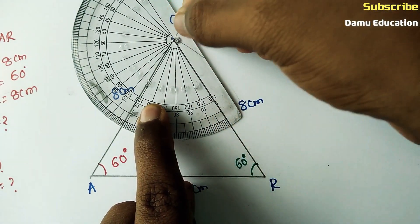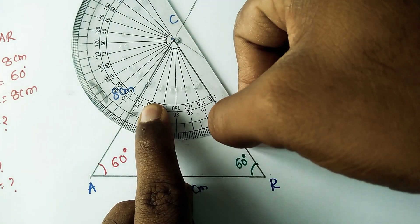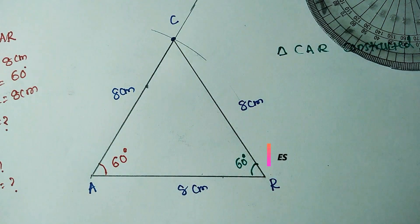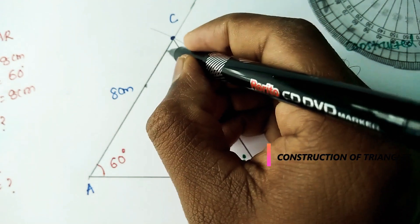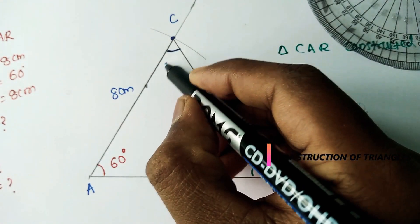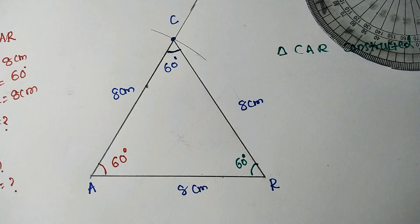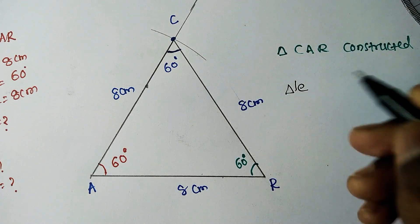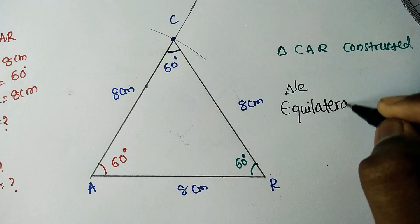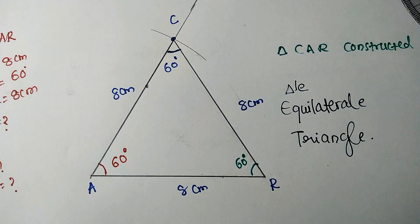They also ask for angle C. Place the protractor center on C — the left side coincides with line segment CR, so measure from that side. It is exactly 60 degrees. So all the line segments are equal to each other and all the angles are equal to each other. Therefore, the given triangle is an equilateral triangle. Thanks for watching this video, please subscribe.